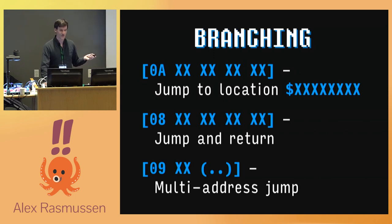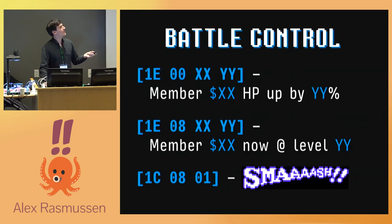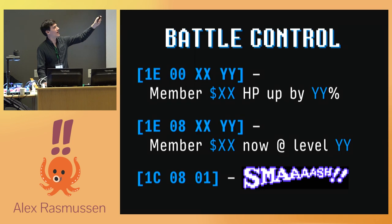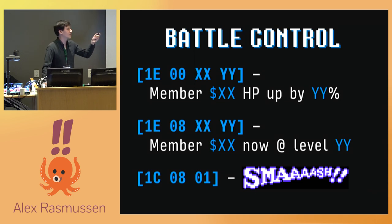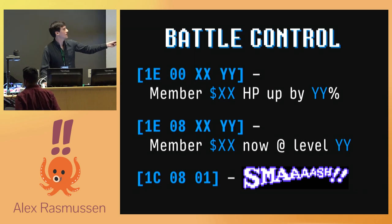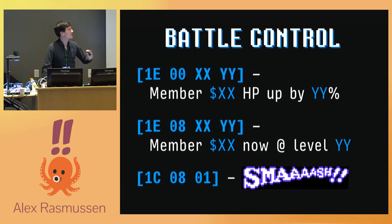There are also more bizarre things, like controlling how battle works. There's an instruction that will increase party member X's HP by Y percent, which is useful when a monster hits you or when you heal yourself. You can also set a party member's level to whatever stats they should be at for a particular level, all in the same instruction set. And then you can display text graphics inside the battle system — for example, this code produces the smash icon. That's literally all it does.